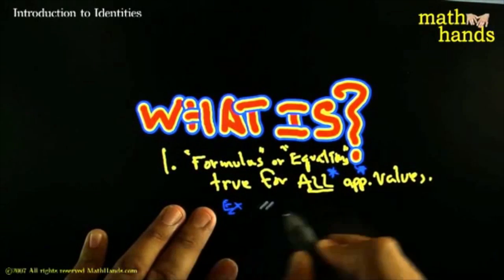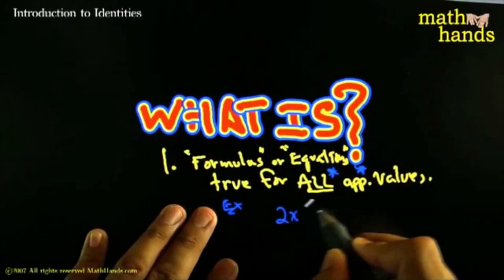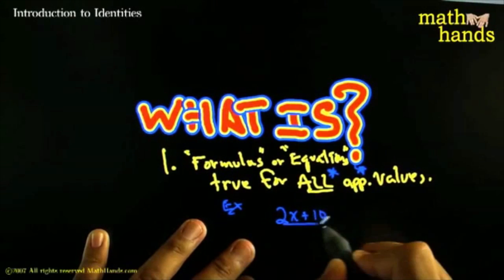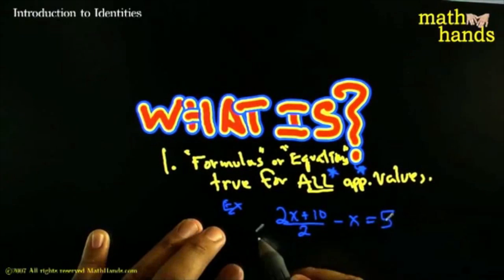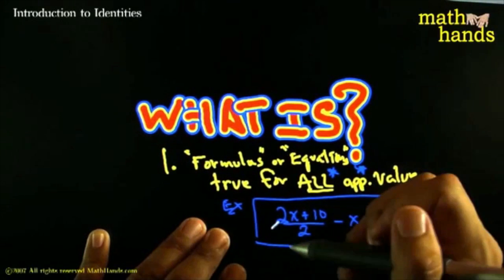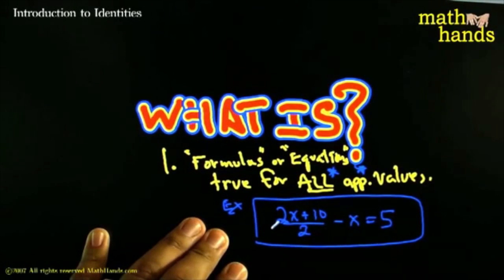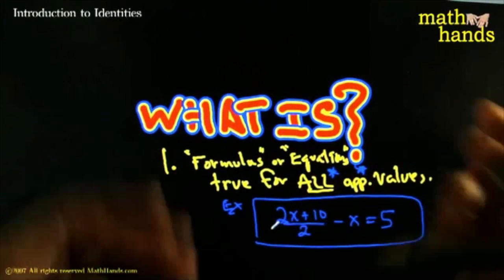So, for example, taking a number, doubling it, adding 10 to it, cutting it in half, and then subtracting the original number. That will always, always, always give you 5 no matter what. Okay? Thank you, Tia Raquel. That's awesome.